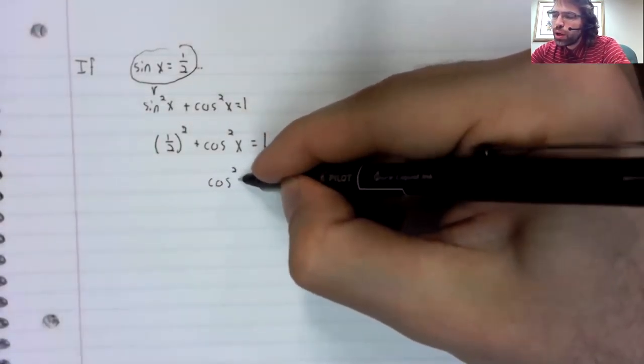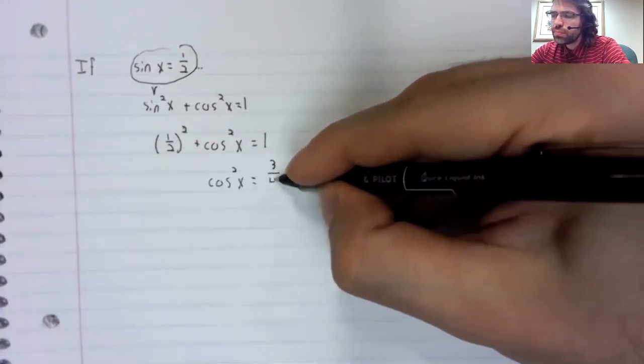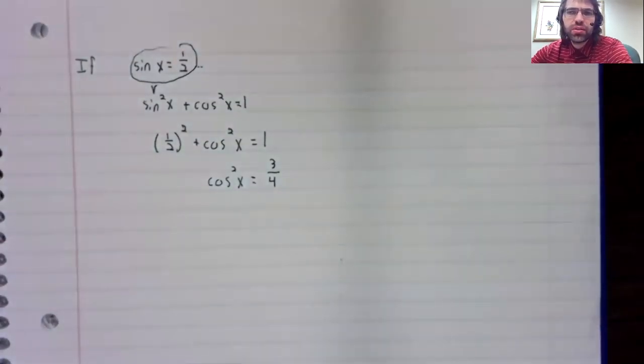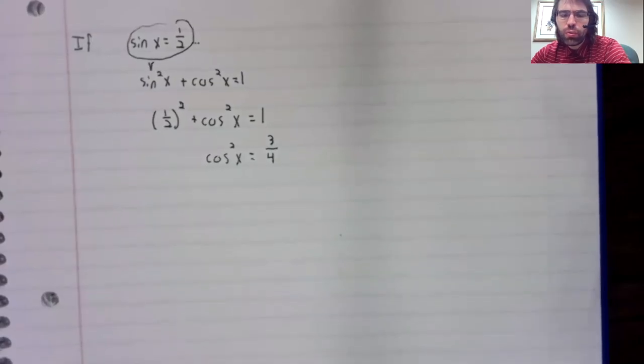Subtract one fourth from both sides, and the cosine squared equals three fourths.